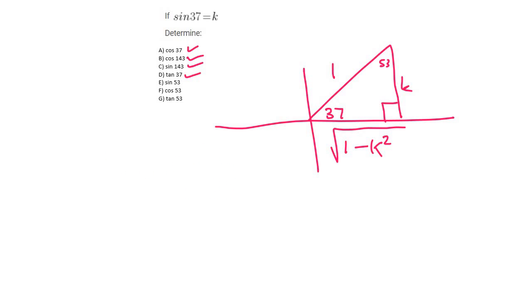Next is sin 53. Now they're using this angle up here, and that sometimes catches students off guard. So sin 53 is opposite over hypotenuse, but now you start at that angle, so the opposite is the square root of 1 minus k squared. Hypotenuse is just 1, and so this is the same as just saying the square root of 1 minus k squared.